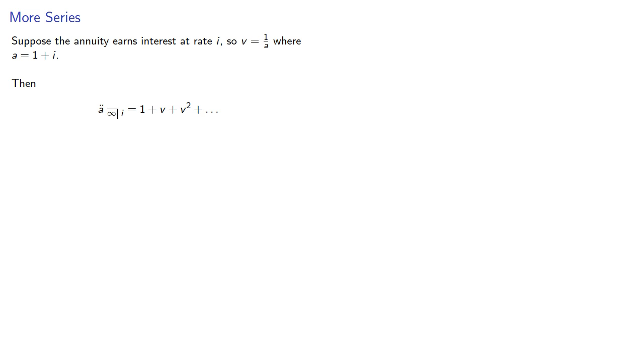If the absolute value of our common ratio is less than one, then the sum one plus r plus r squared and so on is equal to one divided by one minus r.